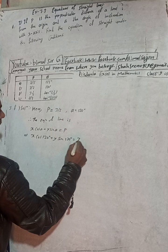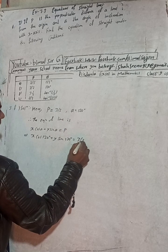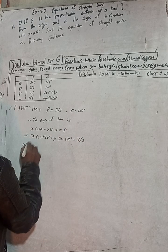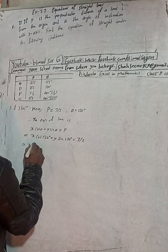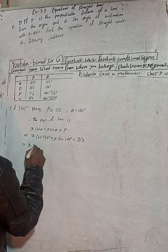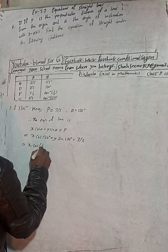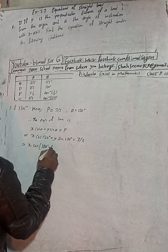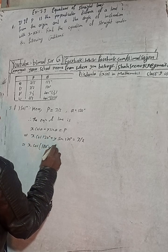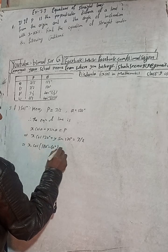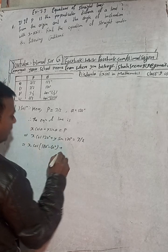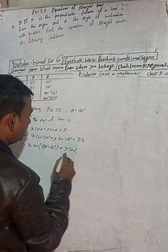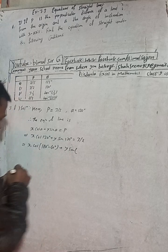So substituting the alpha values: cos 120 degrees plus y sin 120 degrees is equal to p, which is 3/2. Now, cos 120 degrees can be written as cos(180 degrees minus 60 degrees), and y sin 120 degrees can similarly be written.